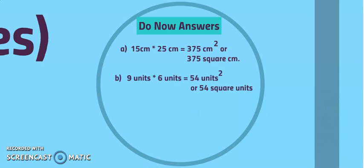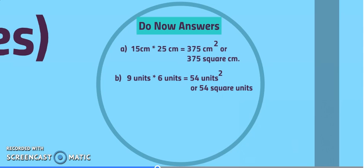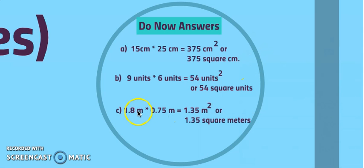B is 9 times 6 equals 54 square units, or 54 units to the second power. Letter C: 1.8 meters times 0.75 meters equals 1.35 square meters, or meters to the second power. Feel free to pause this video if people need time to copy this down. Then we'll continue in 5 seconds.